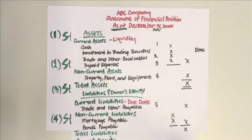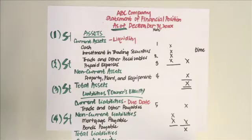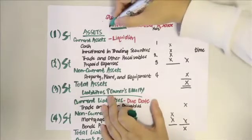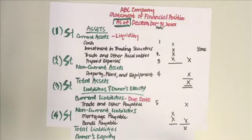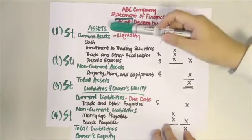Usually the date is December 31, but remember this is not always the case — if a company follows a fiscal year, the date may differ. It's also important to note that for the statement of financial position we use the term 'as of' to indicate a point in time, telling users that as of this day the company has a certain amount of assets, liabilities, or equity.